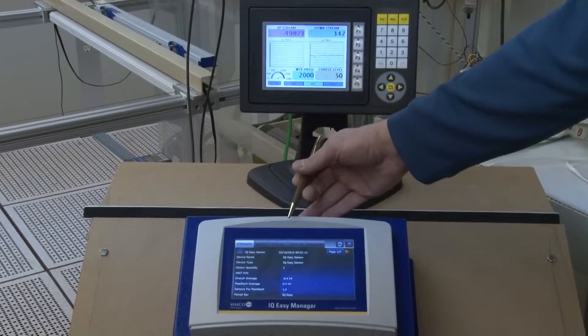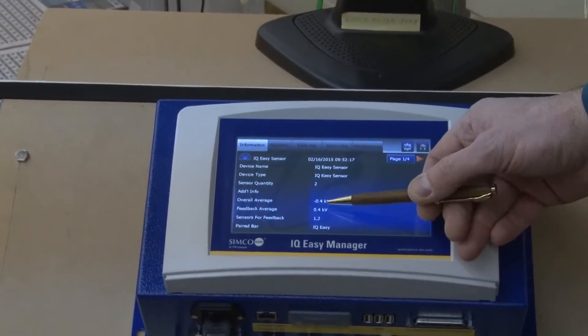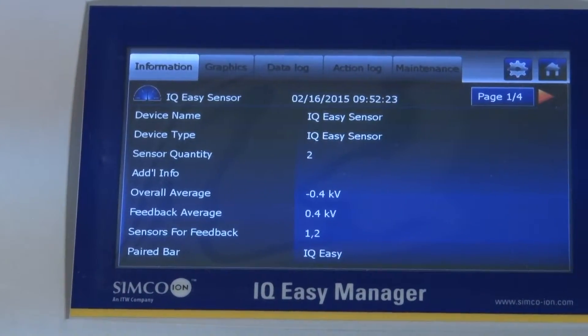If we return back down to the manager screen, we can see now we're within 400 volts of zero. And that should continue to improve as the system runs.